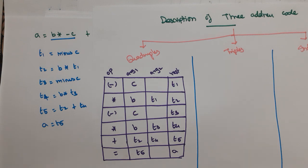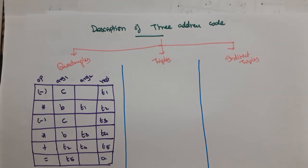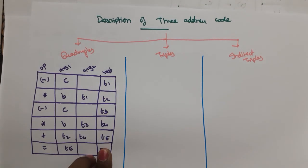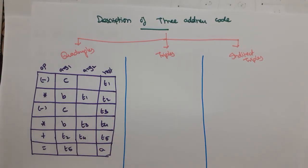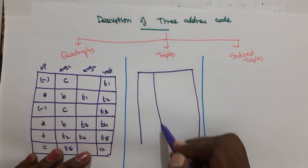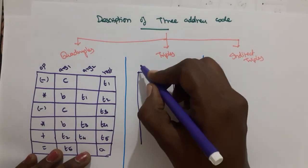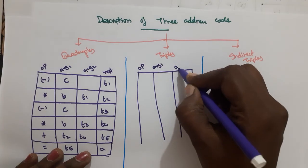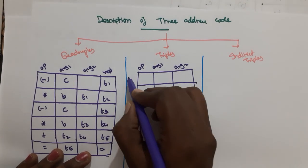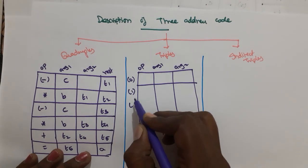When it is represented in this structure, it is called quadruple. Next is triple representation. In triple representation, you don't have all the temporary variables. Instead, the index value is going to store the result of each and every operation. Triples have three columns: operator, argument 1, and argument 2. There is no result column; instead, the index value is used for storing the result.